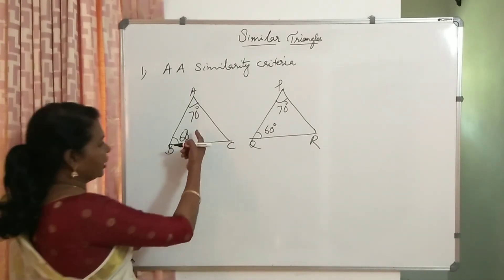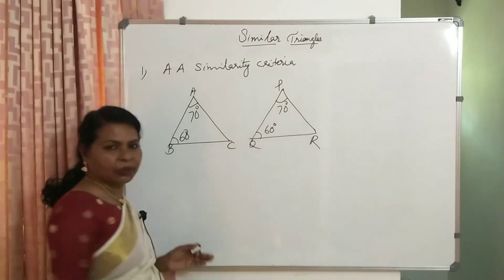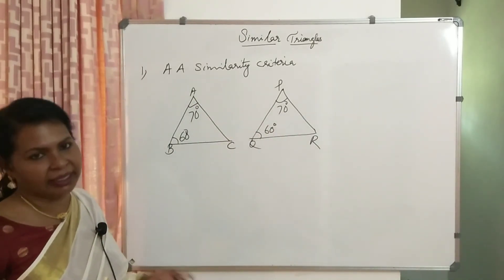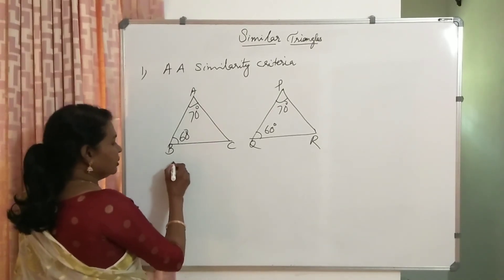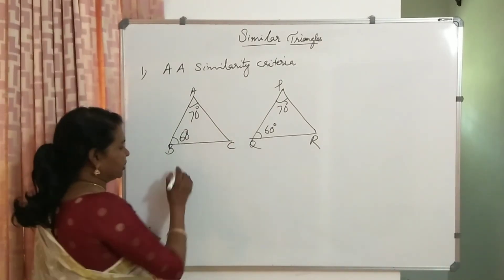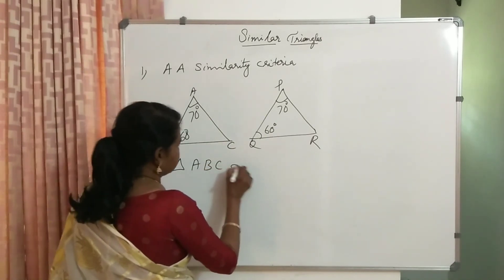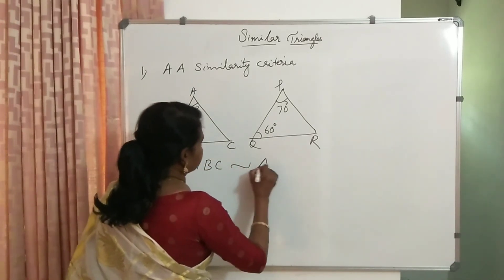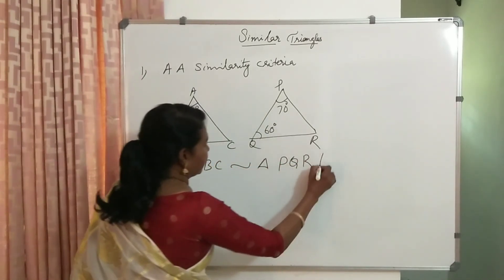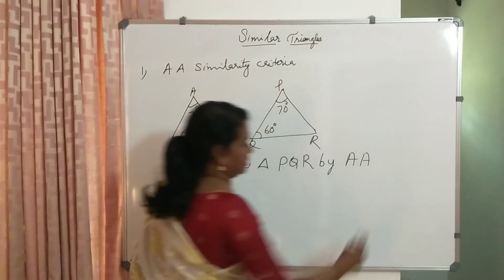If we know two angles are equal, and since the sum of angles in a triangle is 180 degrees, the third angle is automatically equal. So we write: triangle ABC is similar to triangle PQR by AA similarity criteria.